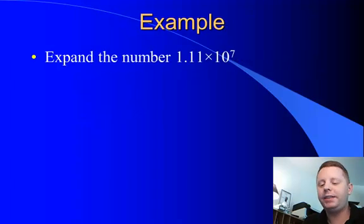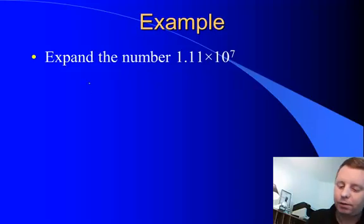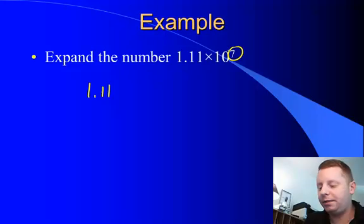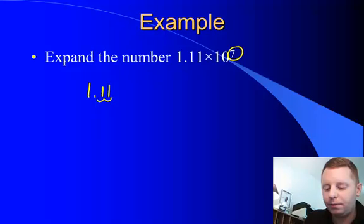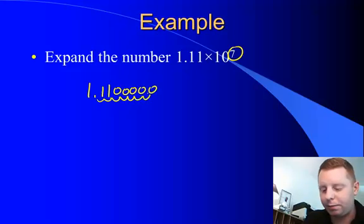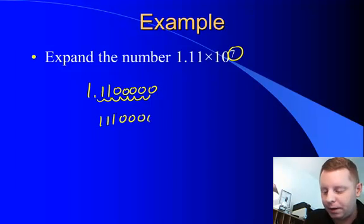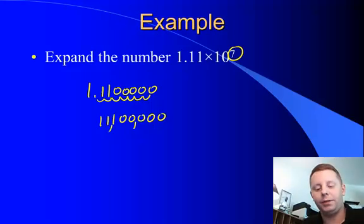And one last example. Let's expand the number 1.11 times 10 to the seventh. Let's put it in non-scientific notation. So we start with 1.11, and then we have to move the decimal point seven places. So it must move one, two, three, four, five, six, seven places. So our final answer would be 1, 1, 1, 0, 0, 0, 0, 0, 0, or 11,100,000.